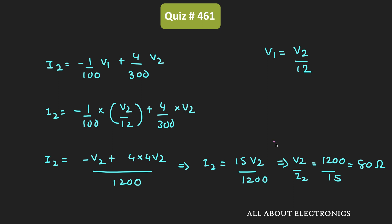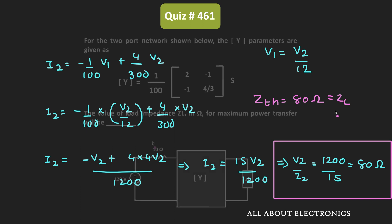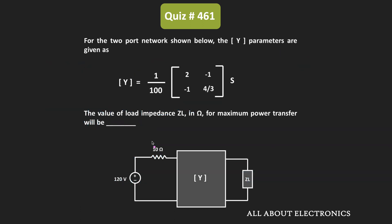So the Thevenin's equivalent impedance ZTH equals 80 Ohm. That means whenever the value of the load impedance equals 80 Ohm, the maximum power will get transferred to the load. For the given two-port network, the maximum power transfer condition is achieved at ZL = 80 Ohm.